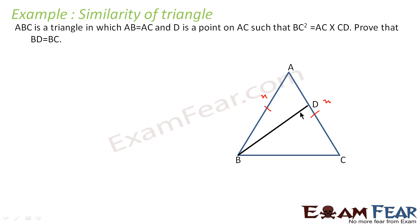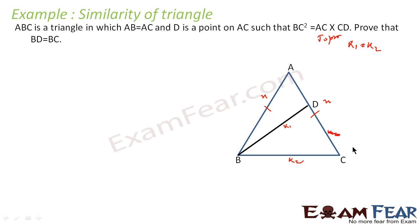We have to prove that BD is equal to BC. We label BD as k1 and BC as k2, so we need to prove k1 is equal to k2. The first thing we can see: from BC squared equals AC into CD, we can rewrite this as BC by AC equals CD by BC. If you see, the ratio of two sides are equal.